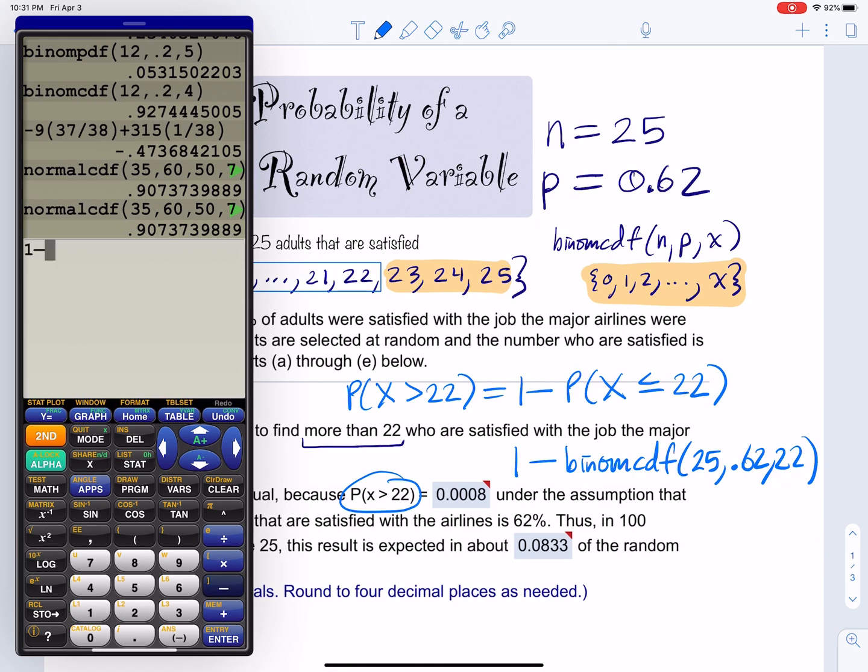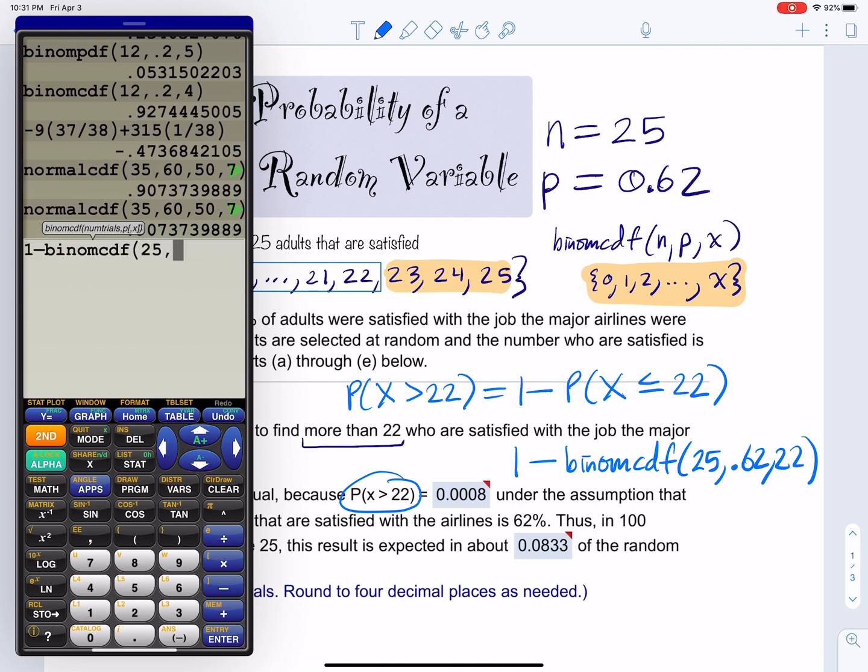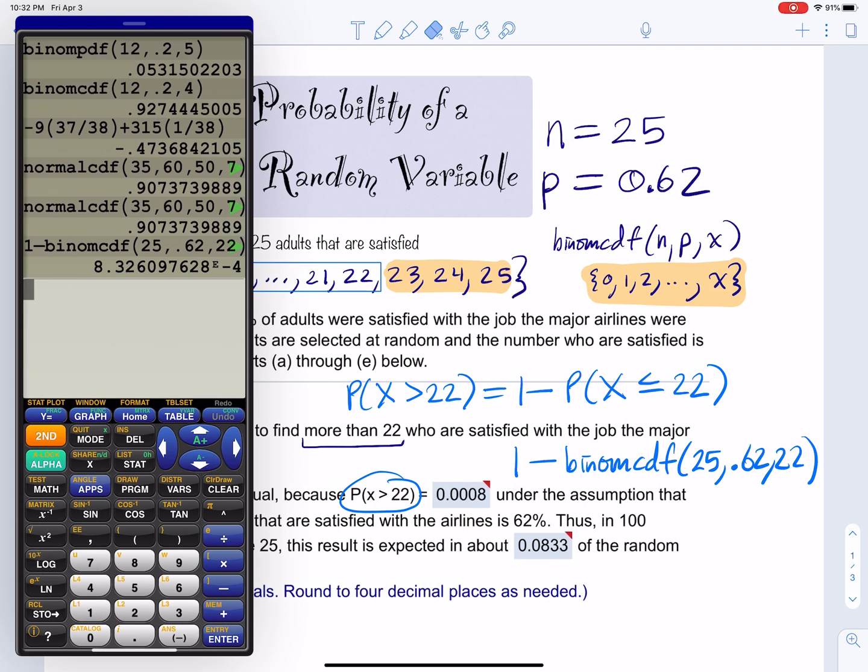So 1 minus second distribution binomcdf, 25, 0.62, 22. And we get that complicated number, which is not 8.32, because there's an e and a negative 4. So it's scientific notation. So this is 0.0008, three zeros basically. So that's how we get this number.